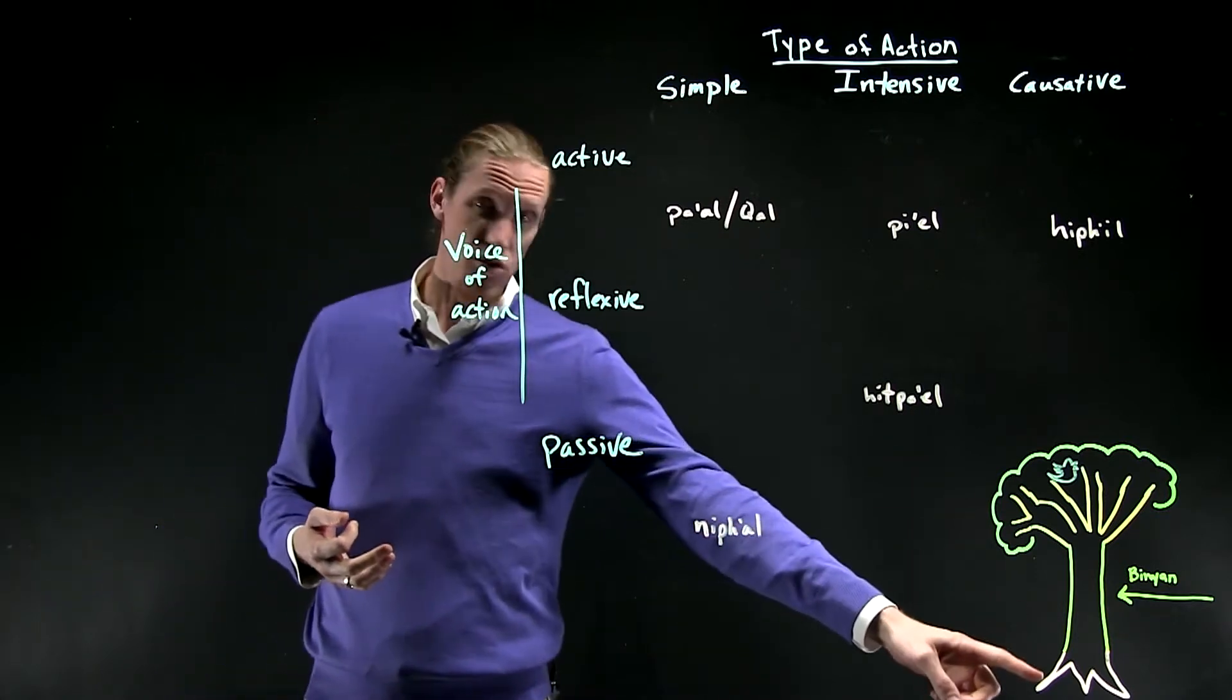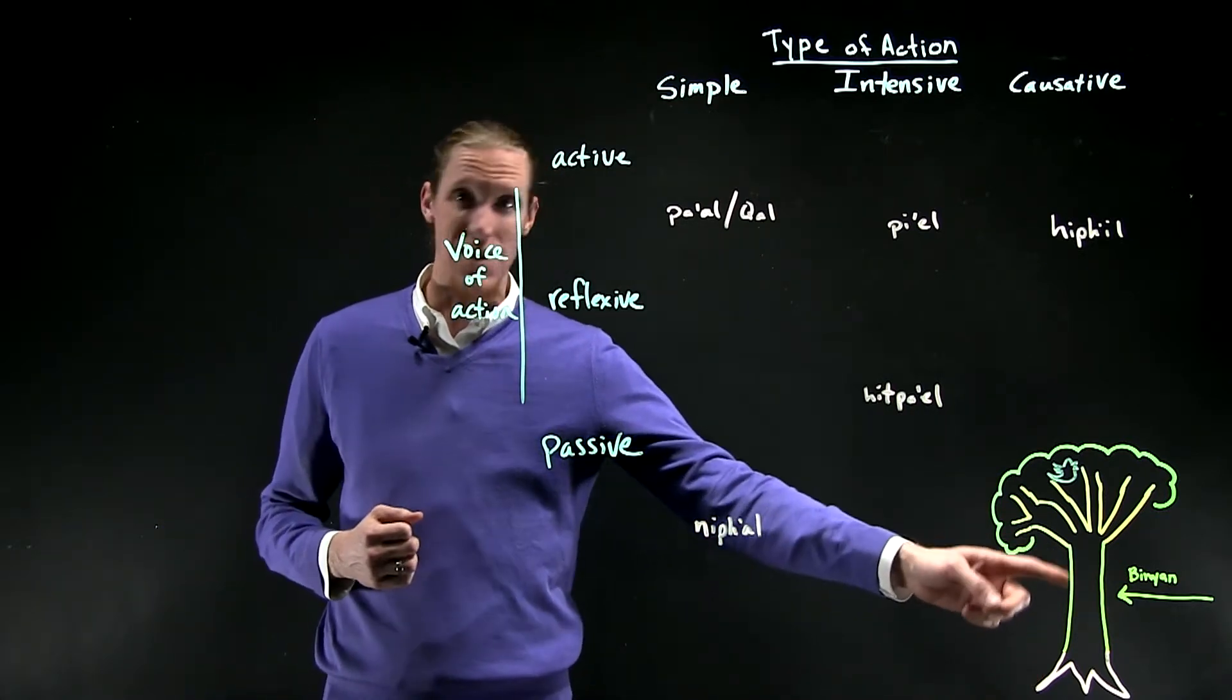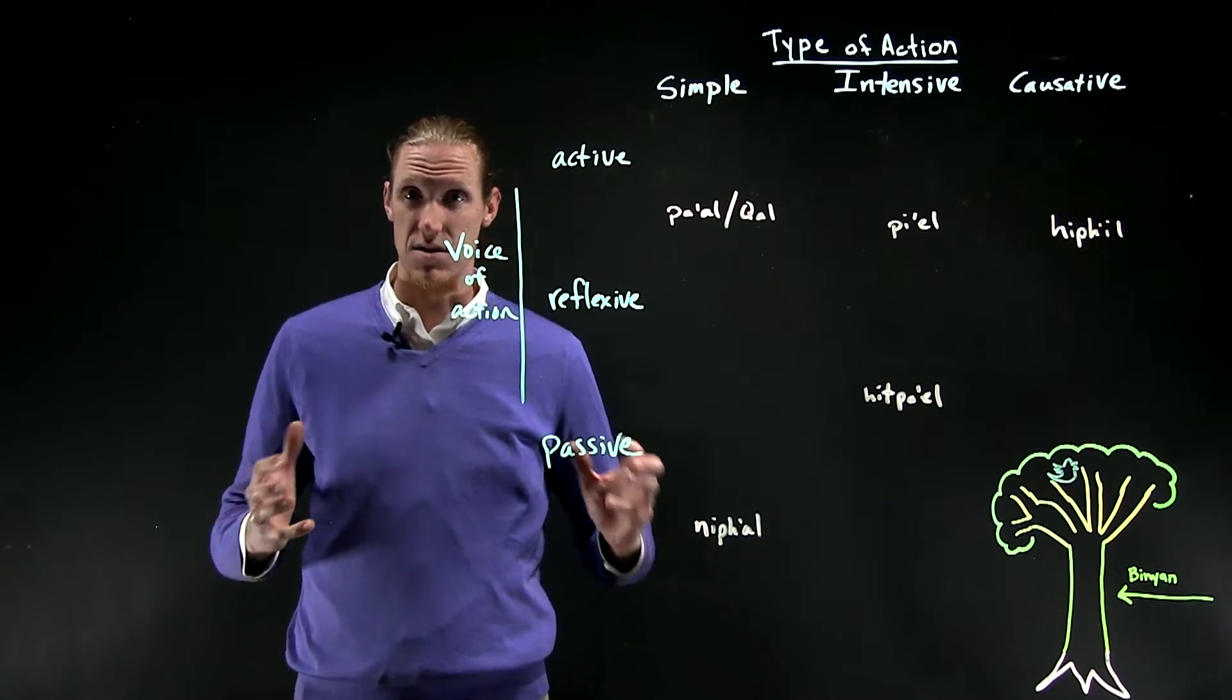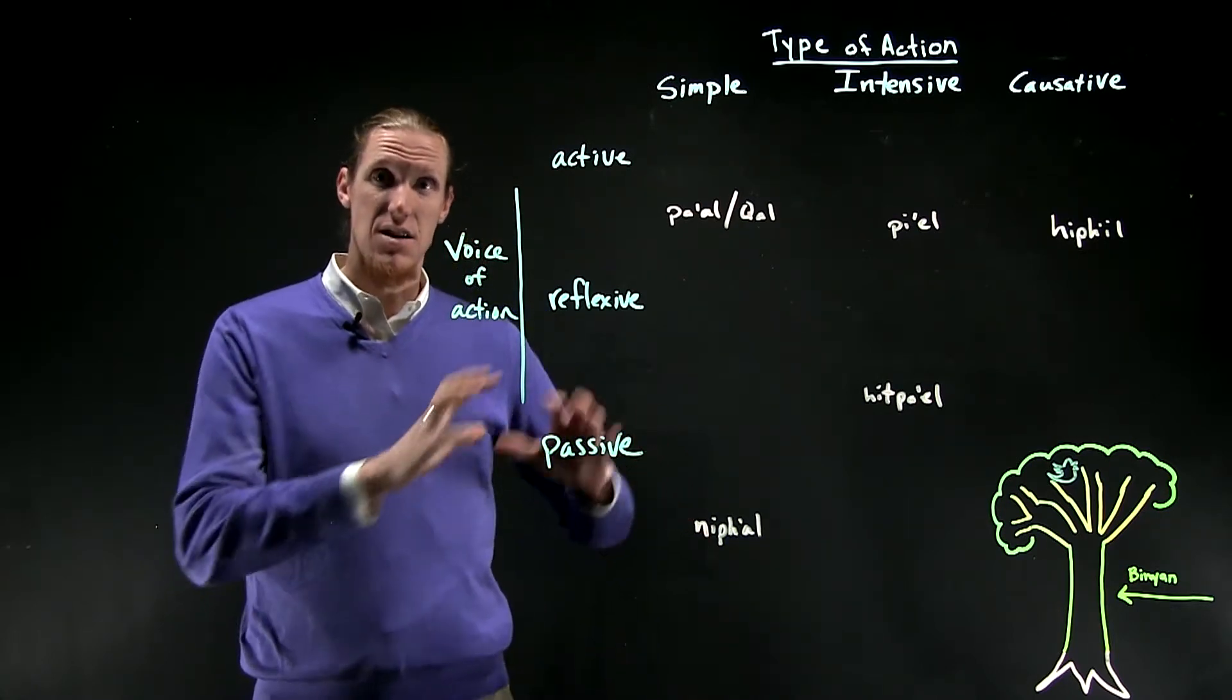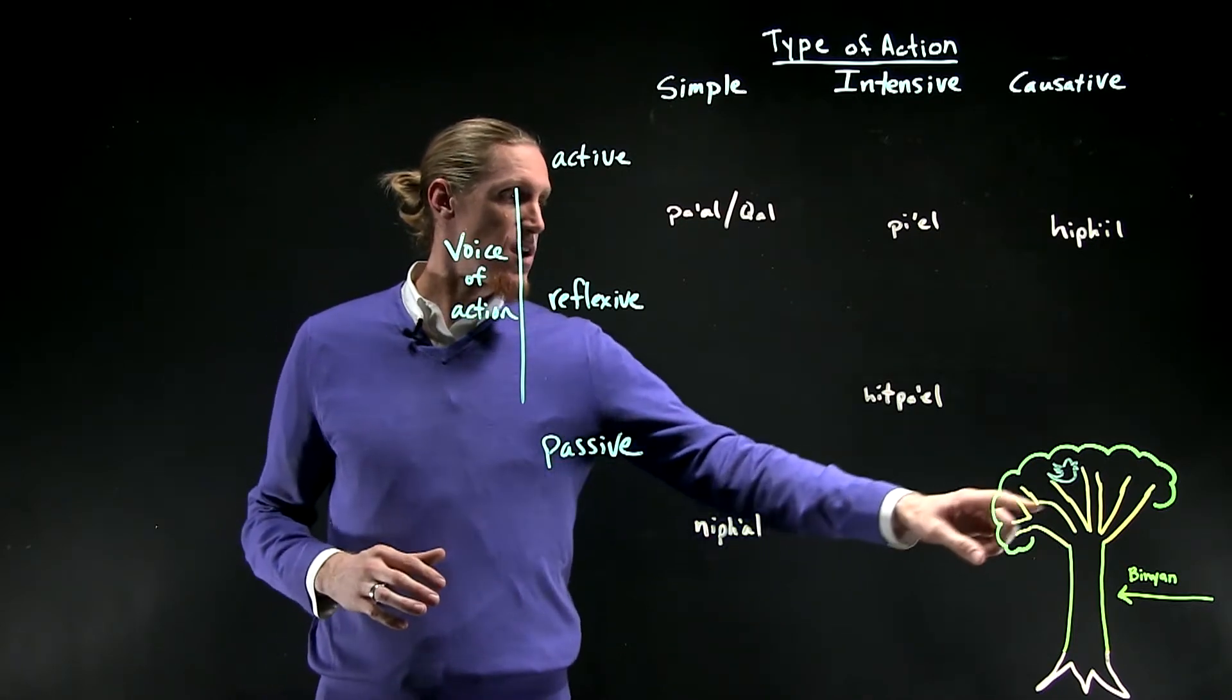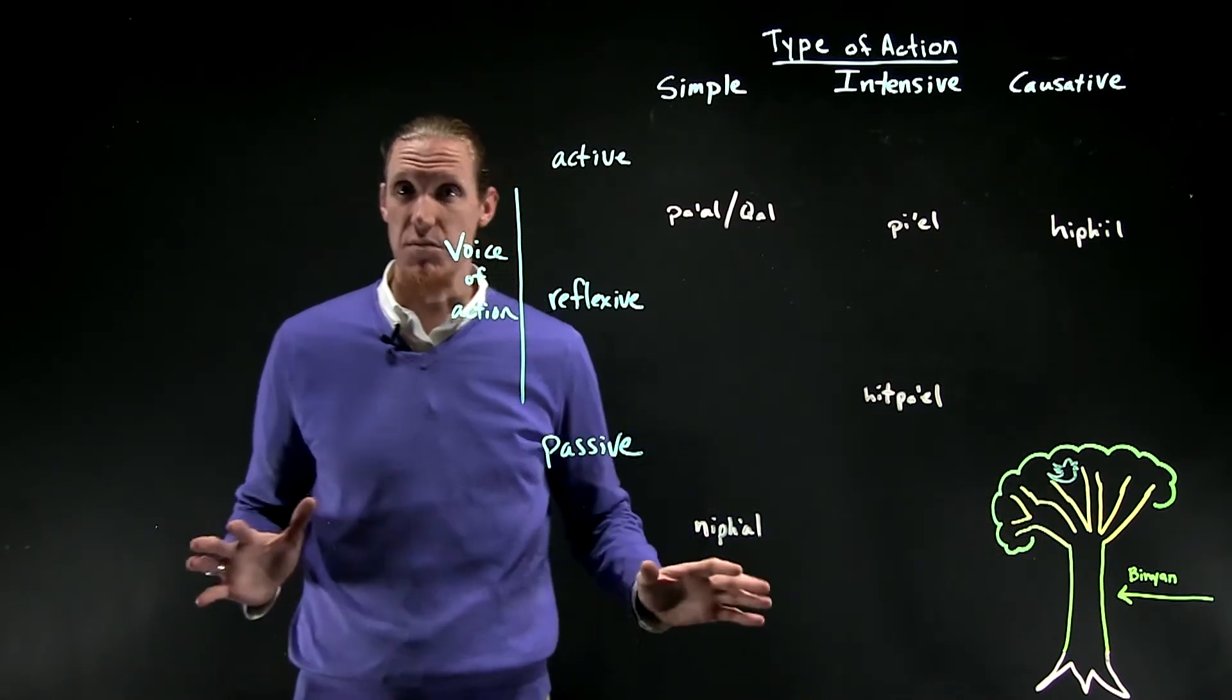It's composed of a root, three root letters. It's composed of a binyan, or a stem, which is a series of vocal and visual stem signs added to the root. And then a form of some kind.